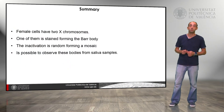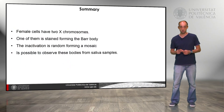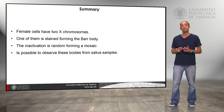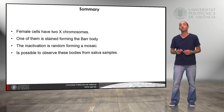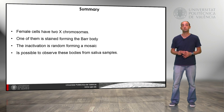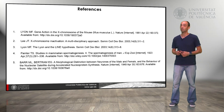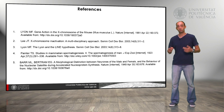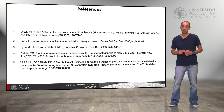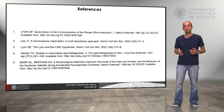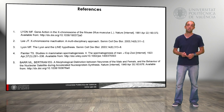As a summary, female cells have two X chromosomes — one of them is condensed forming a bar body, and inactivation is random, forming a mosaic in the body of the female. It is possible to observe those bodies from saliva samples at the laboratory as we have seen. Here we have some references you can use to get more information about this learning object, and with that we finish. Thank you very much for your attention.